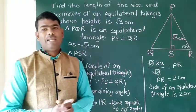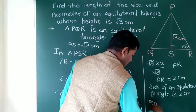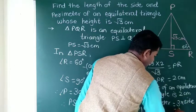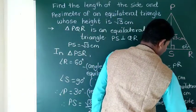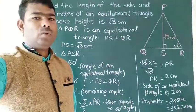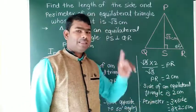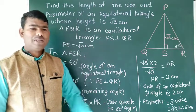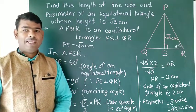Now the perimeter of the equilateral triangle is 3 times the side, which is 3 times 2 cm. Therefore, the perimeter of the equilateral triangle is 6 cm.